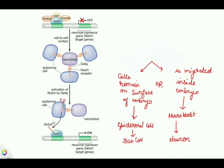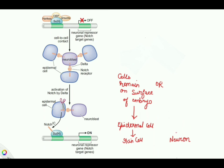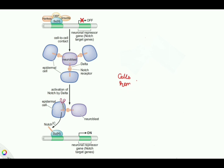That is the fate of neurogenic ectoderm. Now we will look at its molecular mechanism and genetic control. As you can see on the left-hand side of the screen, there is a molecular mechanism beautifully regulated by Delta-Notch signaling, which decides which cell will become a neuroblast and which will become an epidermal cell.